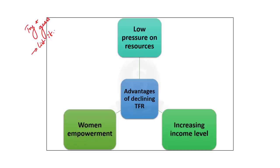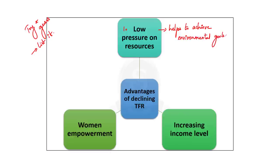Pause the video and guess the advantages before continuing. The first advantage is that falling TFR will lead to lower pressure on land, water, and other resources. If population is reducing, pressure on nature will also reduce, and ultimately this will help in achieving environmental goals.